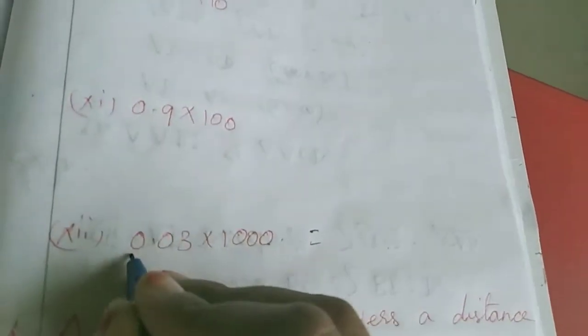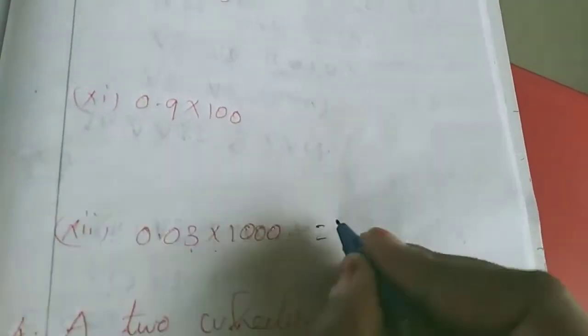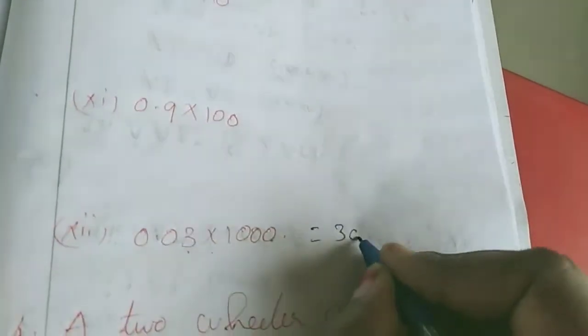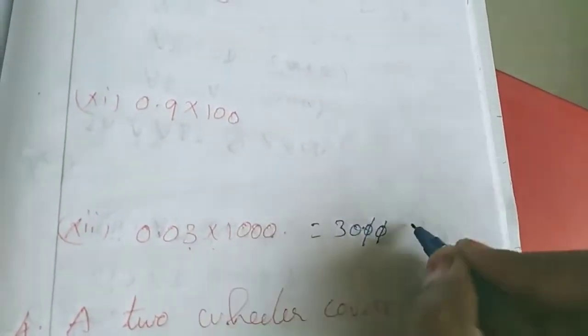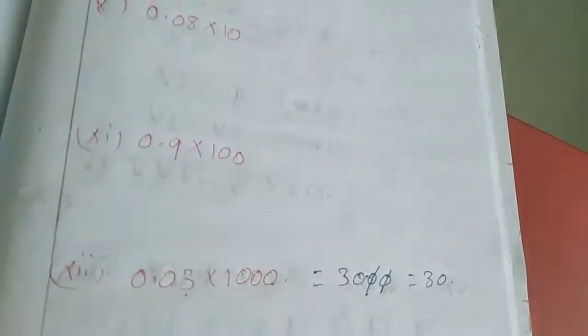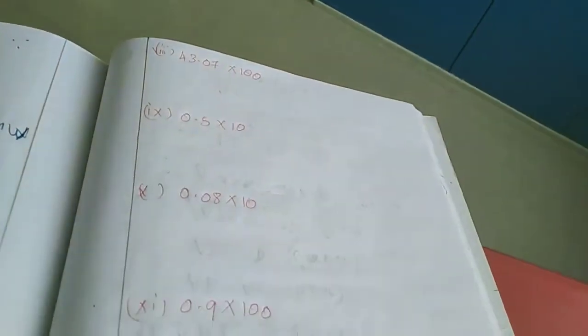1000, here nothing numbers, only 3. So 3, 1000 means 3 0 side, 2 digit 2 digit 1 dot here. So it is cancel, answer is 30. Balance sums is homework for you.